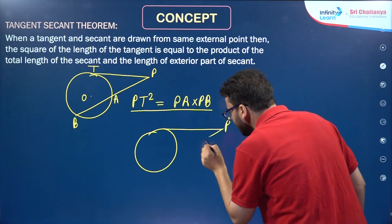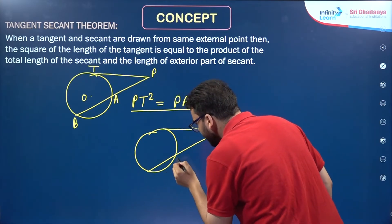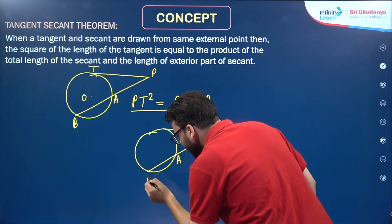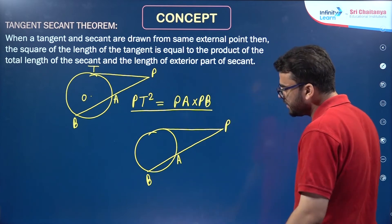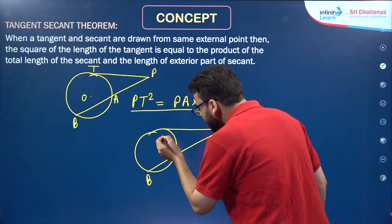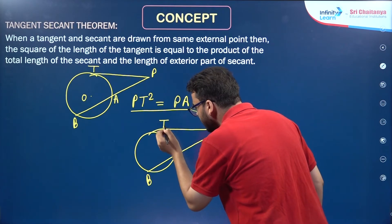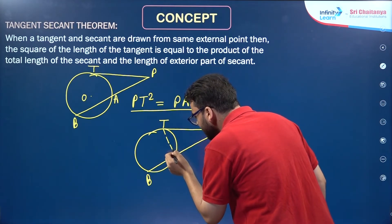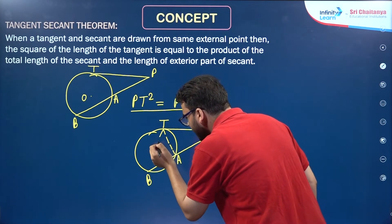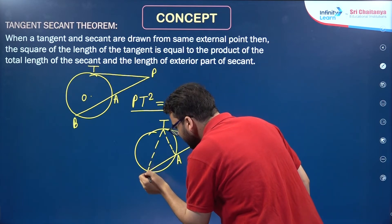Suppose this is point P, and we're drawing a secant PB. To prove it, we need to do some constructions. This is T. We can join this point and then join it like this as well.